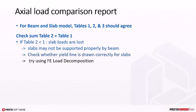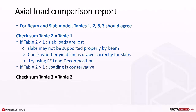Try using finite element load decomposition. If Table 2 is more than Table 1, slab load calculation is more than expected, hence conservative. However, if the difference is significant, then you should also go back to your model to investigate. Lastly, check that the sum of Table 3 is equal or close to Table 2. If Table 3 is less than Table 2, column and wall loads are lost.